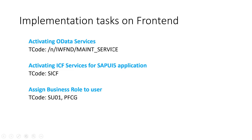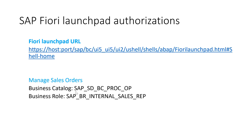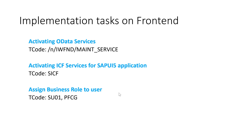On the front-end, the only task we need to do is assign the business catalog and business role to the user. We need to assign the business catalog — from the previous step, we identified it as SAP_SD_BC_PROS. Let's go ahead and assign this to our custom role.